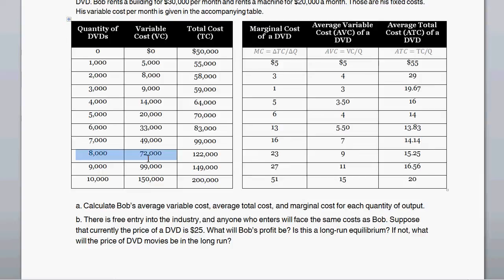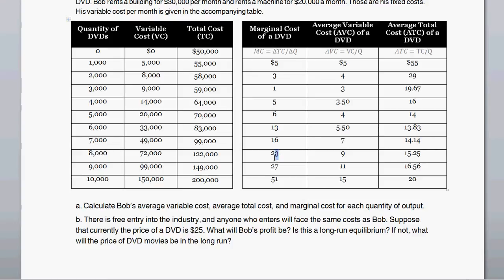So we want quantity where marginal cost equals $25. We produce at 8,000 DVDs. The reason is that the $23 marginal cost is going from 7,000 to 8,000, and the $27 marginal cost is going from 8,000 to 9,000. So approximately, marginal cost is around $25 at the 8,000 quantity level. This firm maximizes profits by producing right around 8,000 DVDs.